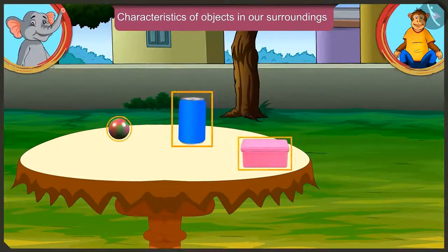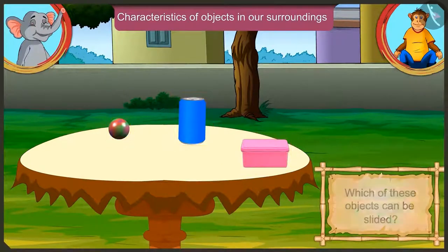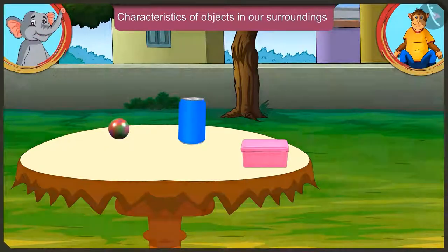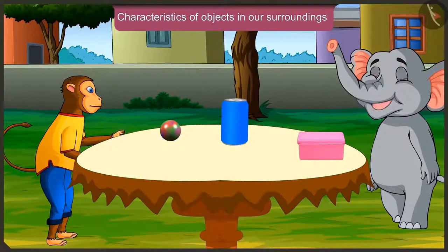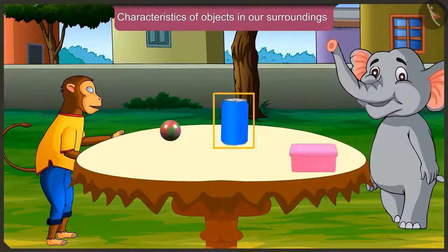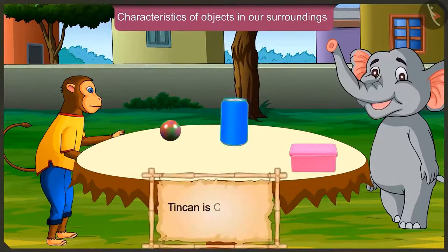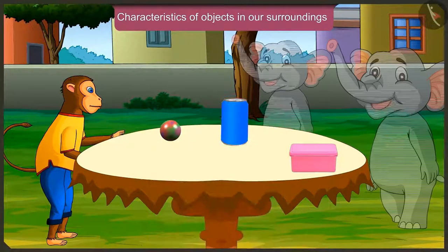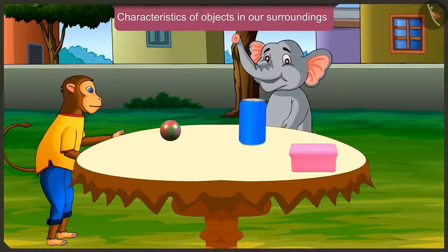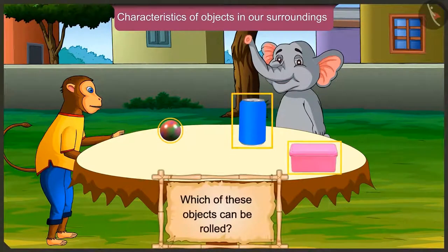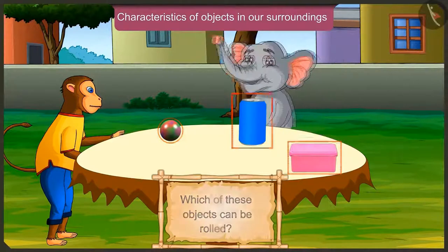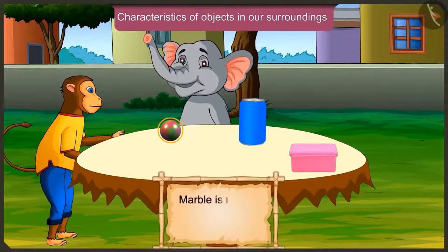Now tell me which of these objects can be moved. This lunch box has a flat surface — we cannot roll it like a ball, we can only slide it. And the tin can? This tin can has a cylindrical shape, which means it is a cylinder, so we can put it upright and slide it, and also roll it. Which of these objects can be rolled?